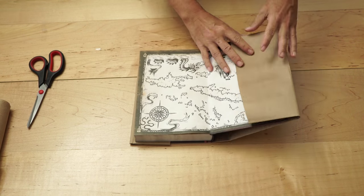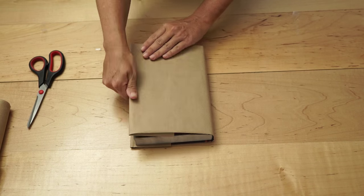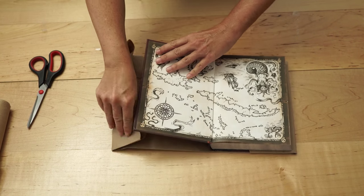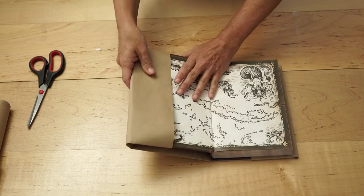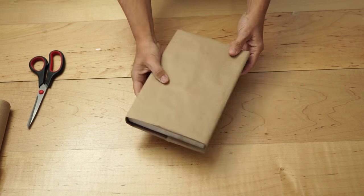Now open the book and stick the cover inside the two-inch folds that you have created. This will keep the cover on both the front and back without using tape or any kind of adhesive. Crease down the edges so everything stays tight.